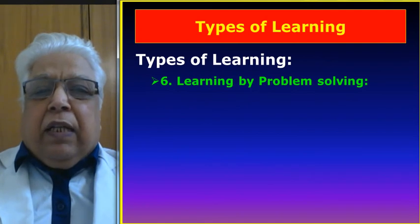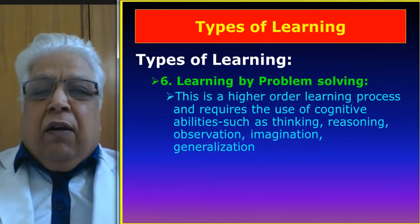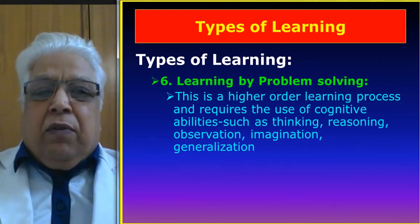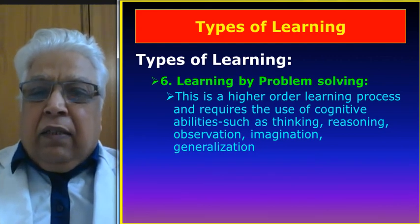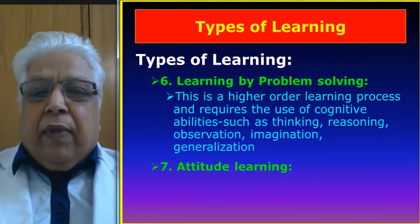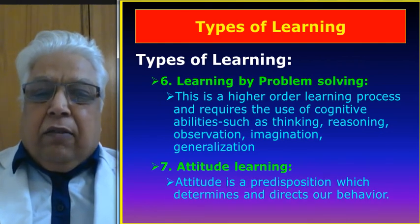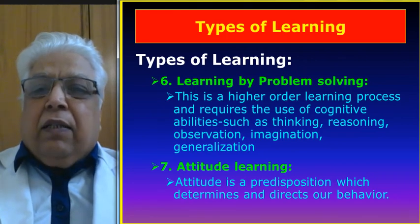The sixth type of learning is problem solving, and this is the higher order of learning process. It requires the use of cognitive abilities such as thinking, reasoning, observation, imagination, and generalization. Seventh is attitude learning. Attitude is a predisposition which determines and directs our behaviour.